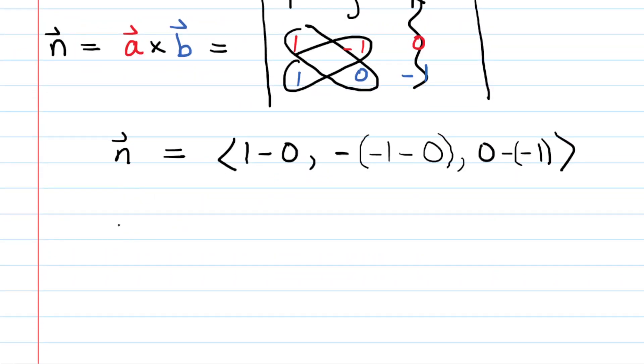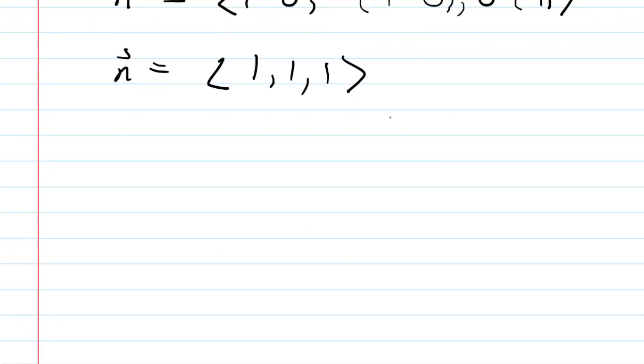We want to simplify this. So our normal vector is going to equal, let's see, 1 minus 0 is 1. We have negative 1, but then we negate that. So that's positive 1. And then we have 0 plus 1 there. So that's 1 as well. So look at that. The normal vector is 1, 1, 1. That's fantastic. Let's go back and take a look at our plane.